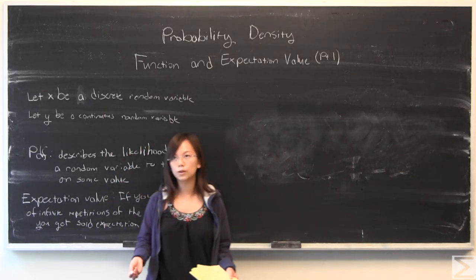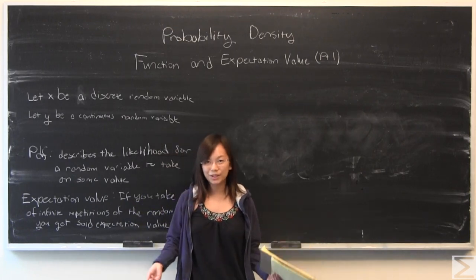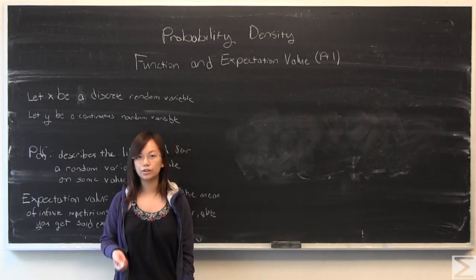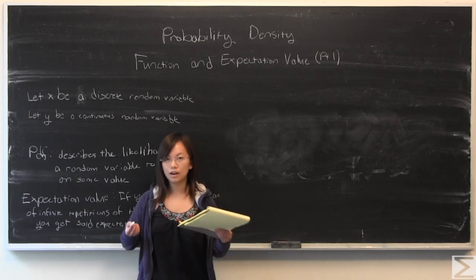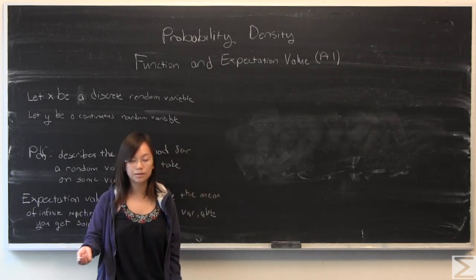This is really important because if you're, say, gambling or trying to predict something, your expectation value is basically what you're going to say you think is going to show up from said random variable.